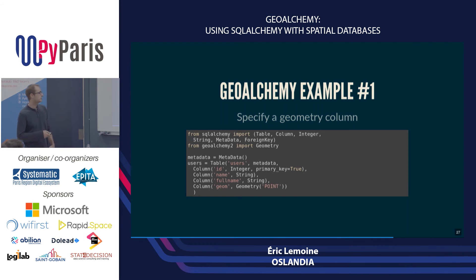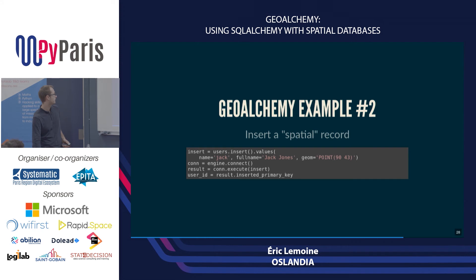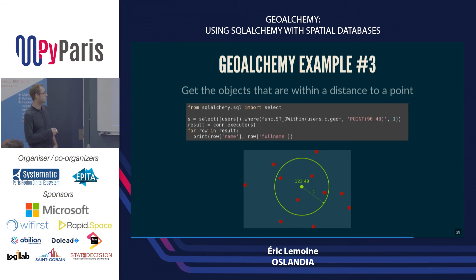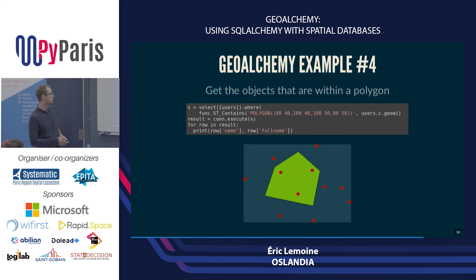Same kind of examples as before — I have my users table and I can add another column which is the geometry column, getting this type from GeoAlchemy. I can do insertion: this time I insert a user with a geometry specified through its textual representation and do the usual stuff for insertion. For queries, I do a selection on the users table with a filter using the ST_DWithin PostGIS function within my SQLAlchemy query. Another example with a polygon: instead of ST_DWithin I use the ST_Contains function in the where clause to get all the users within a polygon.